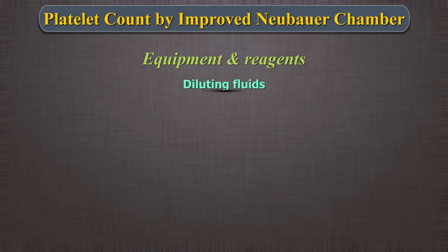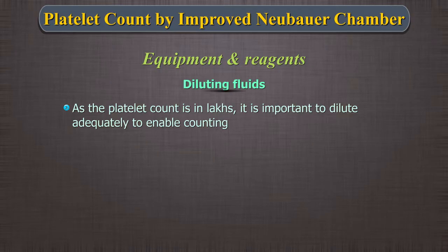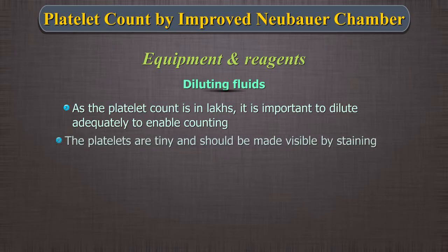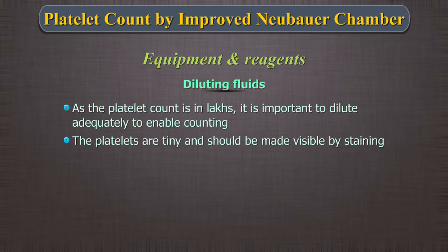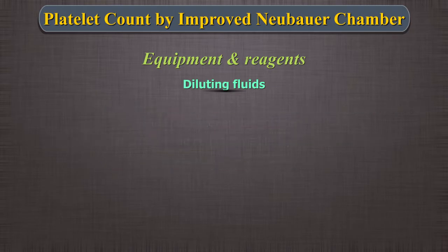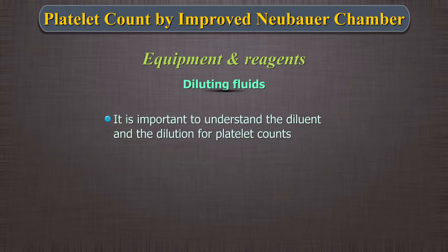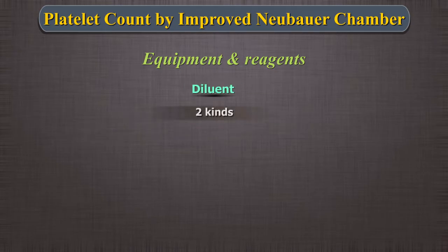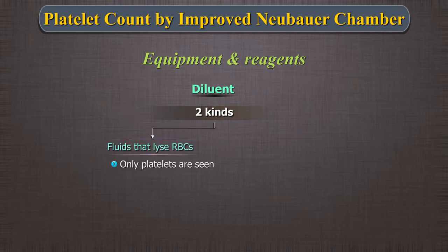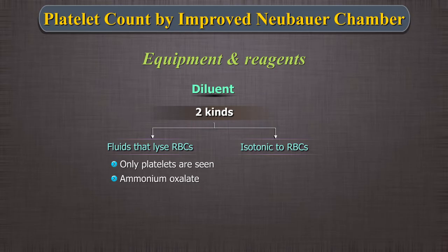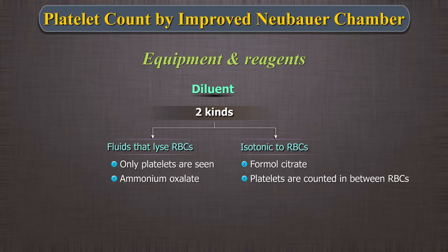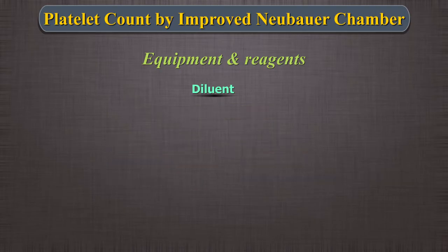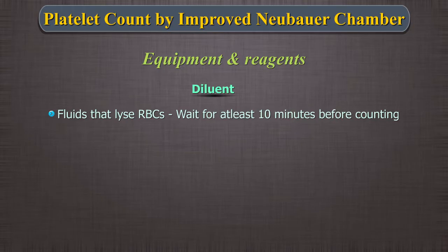6. Diluting fluids: As the platelet count is in lakhs, it is important to dilute it adequately to enable counting. The platelets are tiny and should be made visible by staining. The fluid also prevents platelet clumping. Thus, it is important to understand the diluent and the dilution for platelet counts. There are two kinds of platelet fluids available: fluids that lyse RBCs so that only platelets are seen on the field — for example, ammonium oxalate — and those that are isotonic to RBCs and will not lyse them — for example, formal citrate, in which case the platelets are counted in between RBCs. If using fluids that lyse RBCs, wait for at least 10 minutes so that the RBCs can be lysed before counts are done.